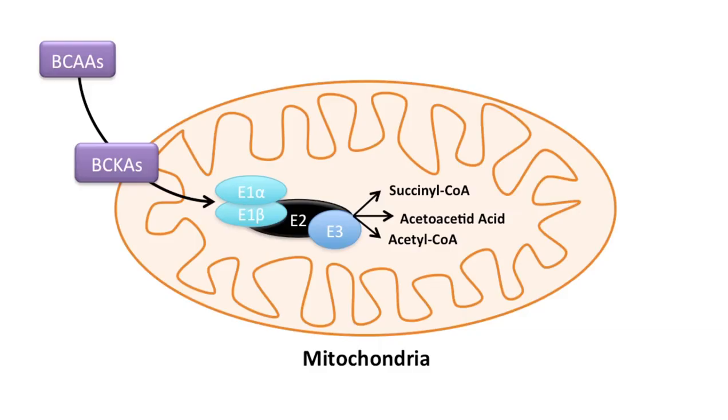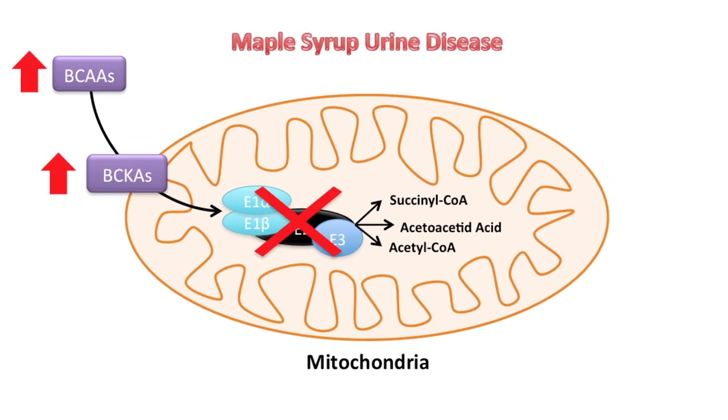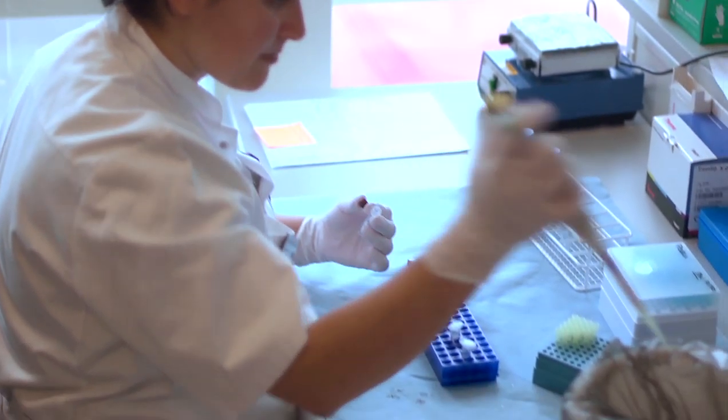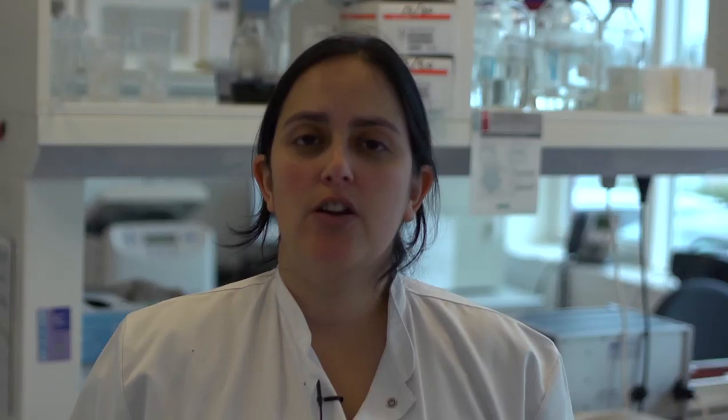Maple syrup urine disease, MSUD, is a disease caused by a defect in the catabolism of branched chain amino acids. This is more specifically in the branched chain alpha-ketoacid dehydrogenase complex, which is located in the mitochondria and is a multi-enzyme protein complex. This study has been done in collaboration with Dr. Pilar Rodríguez Pombo and Professor Magdalena Ugarte from the Centro de Diagnóstico de Enfermedades Moleculares at Universidad Autónoma de Madrid.